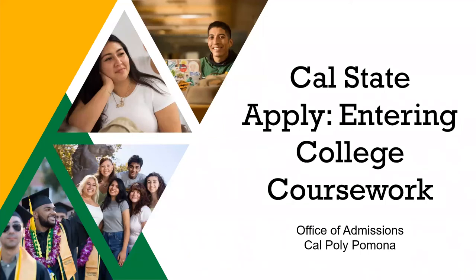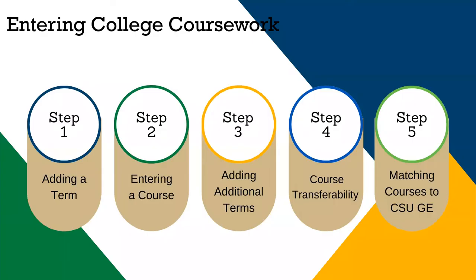Thank you for choosing Cal Poly Pomona as a prospective school. In this how-to video, we will show you how to accurately enter all college coursework. It is important to enter and report all college coursework that has been attempted, completed, is in progress, or planned. This ensures that we are able to accurately evaluate your application and calculate the correct credit. A misreporting of courses or miscalculation of units can cause your application to be denied.